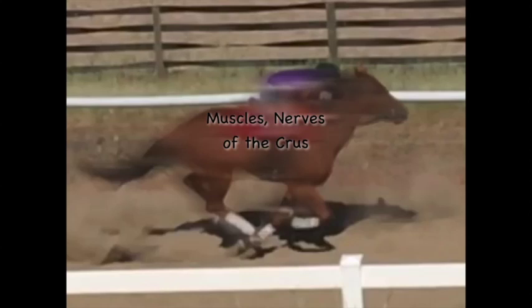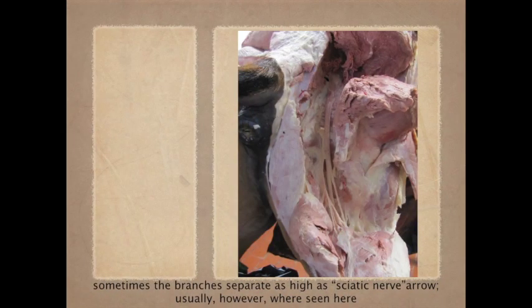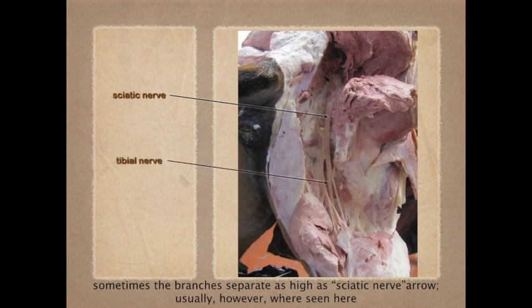Welcome. In this little lecture, we're going to talk about the muscles and nerves of the crus, which is that region below the stifle. Before we get there, we need to review that the sciatic nerve courses down in the caudal thigh. It's going to branch into the tibial nerve, which goes caudally and between the bellies of the gastrocnemius muscle.